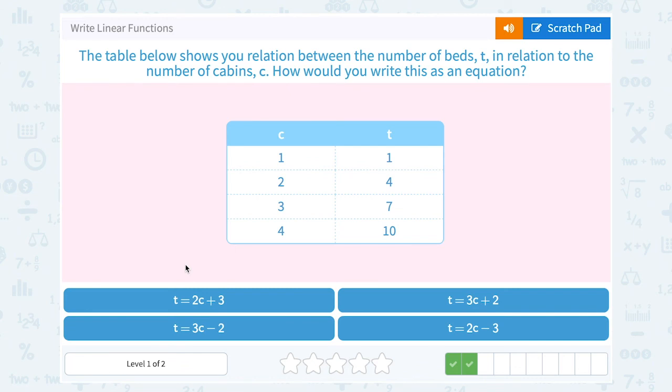The table below shows you the relation between the number of beds T in relation to the number of cabins C. How would you write this as an equation? Well, let's take a look.